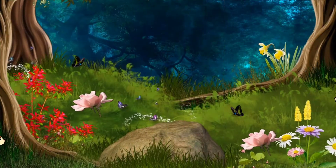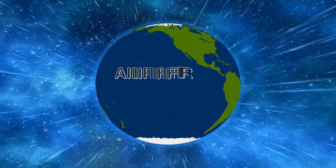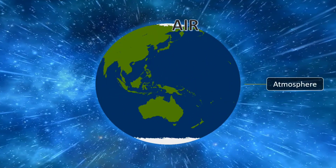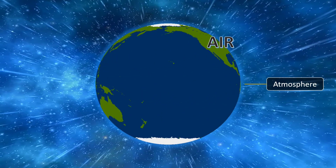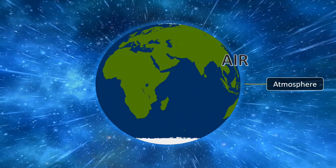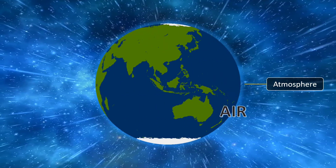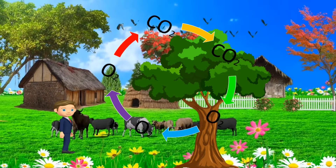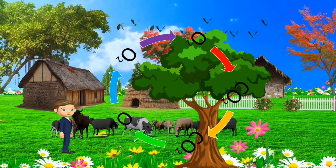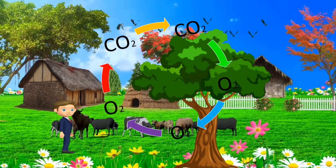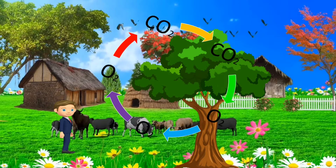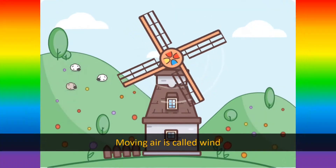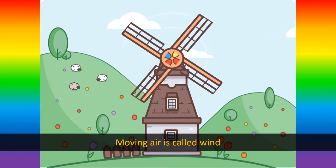Air. The atmosphere is the thin blanket of air which is a mixture of several gases, dust particles, etc., which surrounds the Earth. All living beings need oxygen for their survival. They release carbon dioxide, which is taken by plants for photosynthesis. The moving air is called wind.